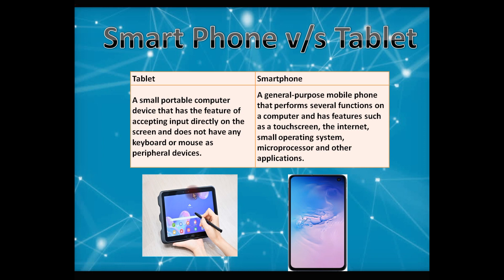The next slide covers the difference between a tablet and a smartphone. A tablet is a small portable computer device that has the feature of accepting input directly on the screen, and does not have any keyboard or mouse as a peripheral device. A smartphone is a general-purpose mobile phone that performs several functions of a computer and has features such as a touchscreen, internet, a small operating system, microprocessor, and many other applications.